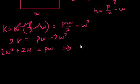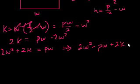Subtract pw from both sides, you get 2w squared minus pw plus 2k equals 0. And that is choice E. 2w squared minus pw plus 2k. That is choice E.